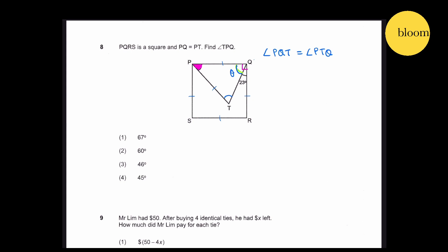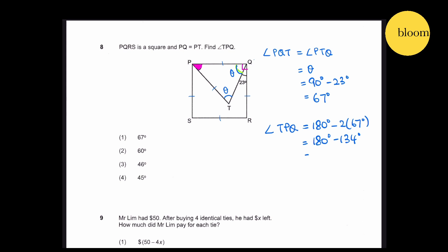The two base angles of the isosceles triangle are equal. Each equals 90° minus 23°, giving 67°. So angle DPQ equals 180° minus 2 times 67°, which is 180° minus 134°. You get 46°. This is the answer.